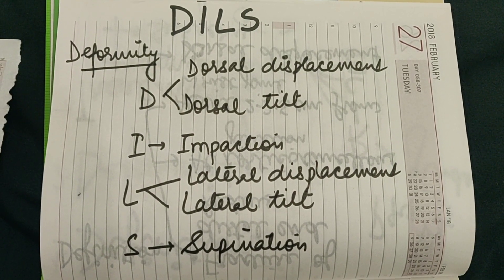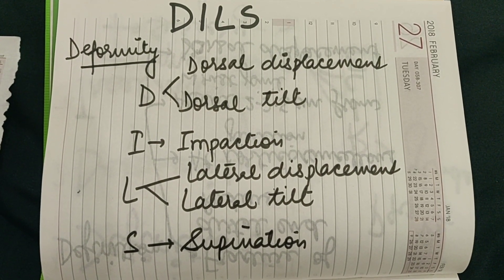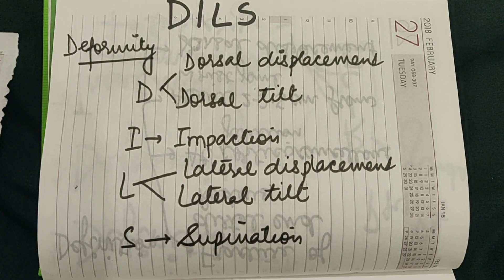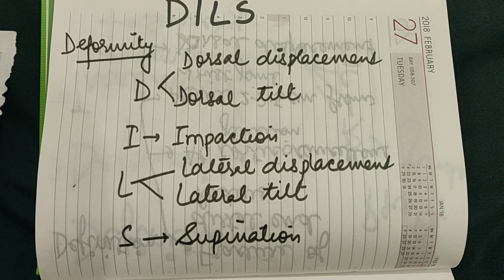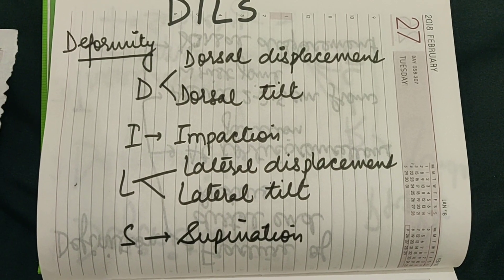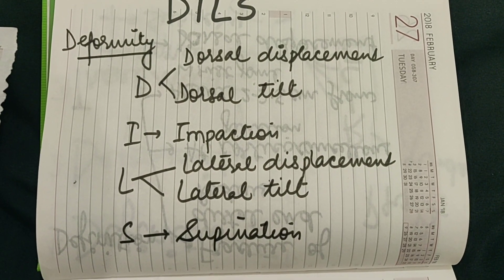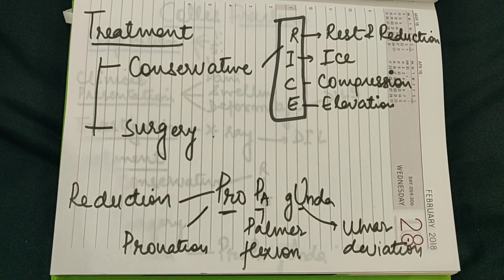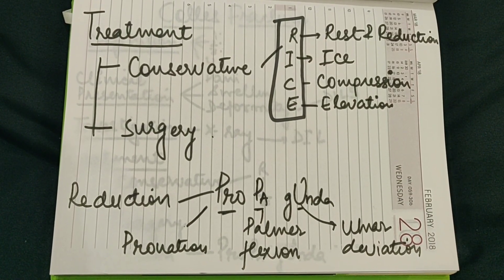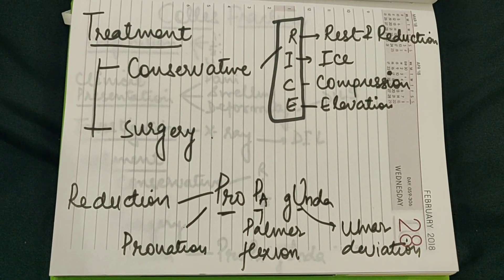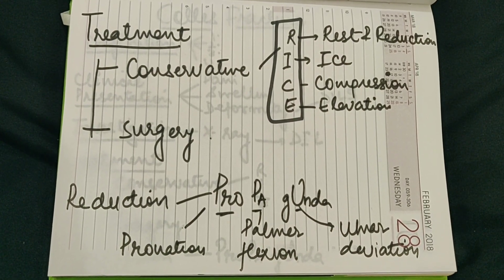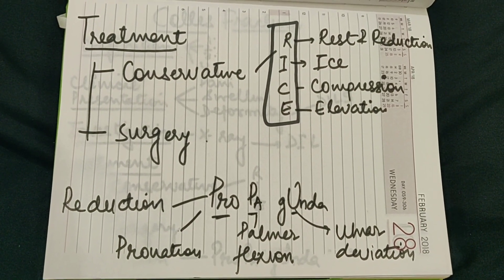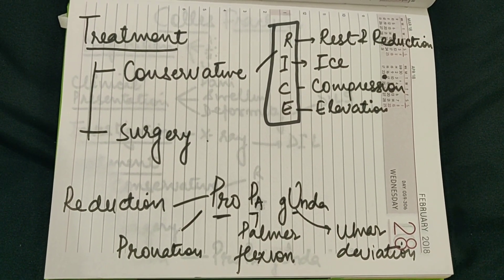In the mnemonic DILS: D stands for dorsal displacement and dorsal tilt, I stands for impaction, L for lateral displacement and lateral tilt, and S for supination. In treatment, we have conservative and surgery. For conservative management, the mnemonic is RICE: R-I-C-E.